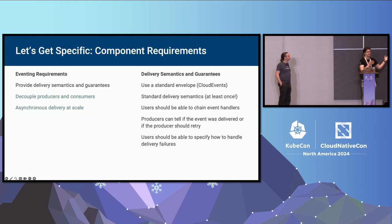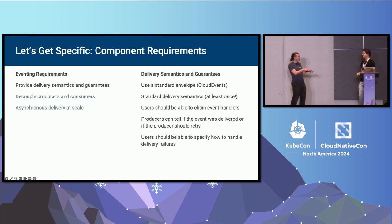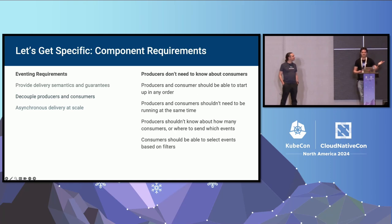We wanted normal delivery semantics of at-least-once delivery — if you send an event into Knative Eventing, it should send it to all consumers who care about it at least once. Exactly-once delivery semantics are complicated and normally involve code on the consumer side too. For decoupling: producers should just know if the event was delivered or not, users should be able to specify what happens when delivery fails, and producers should not need to be aware of who's consuming their events, nor consumers of who's sending.